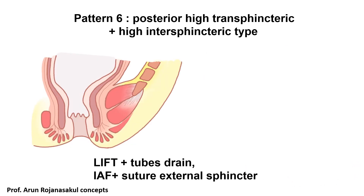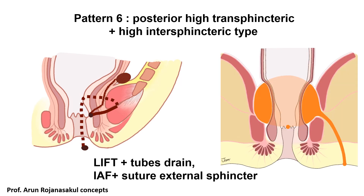There is another complicated combined pattern with two components: a posterior high transsphincteric fistula pattern along with a high intersphincteric fistula pattern. When combined, this is the most complex pattern — presenting with horseshoe abscess (one side or both sides), along with intersphincteric abscess and high intersphincteric abscess, with the track crossing at the higher external sphincter level. Primary fistulotomy should be avoided. Sphincter-preserving procedures are warranted — options include LIFT with tube drainage of the abscess cavity, or intersphincteric fistulotomy with suturing of the external sphincter outside (E-LIFT).